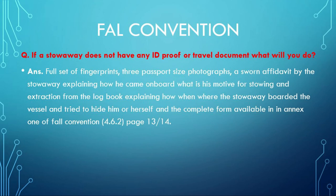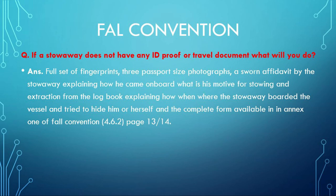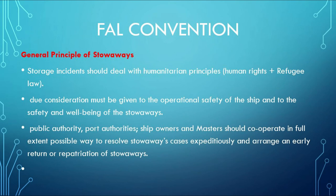Next question: if a stowaway does not have any ID proof or travel document, what will you do? You should take: a full set of fingerprints, three passport-size photographs, a sworn affidavit by the stowaway explaining how he came on board and what his motive for stowing away was, and an extraction from the logbook explaining how, when, and where the stowaway boarded the vessel and tried to hide. Complete the form available in Annex 1 of FAL Convention, pages 13-14.